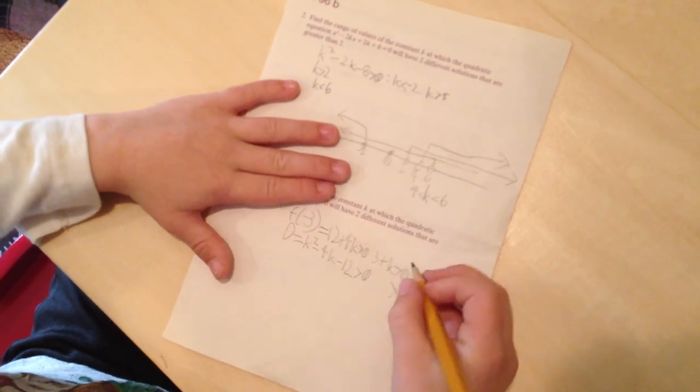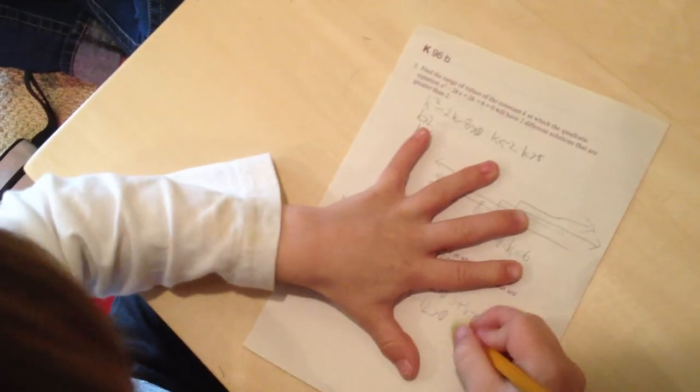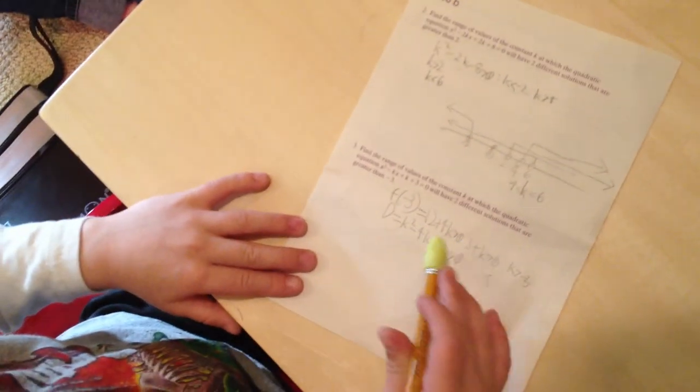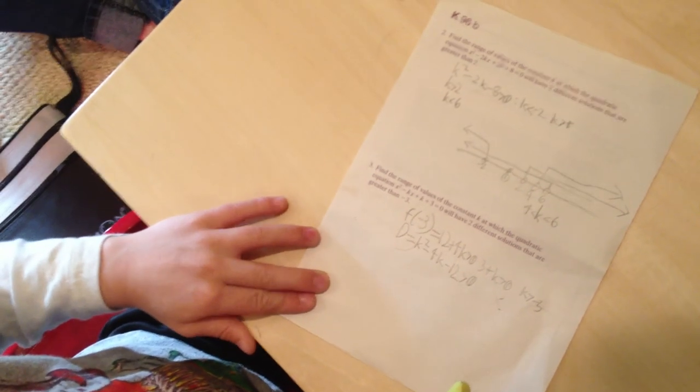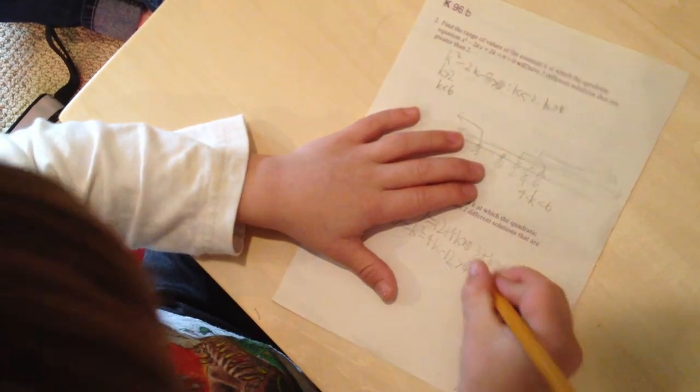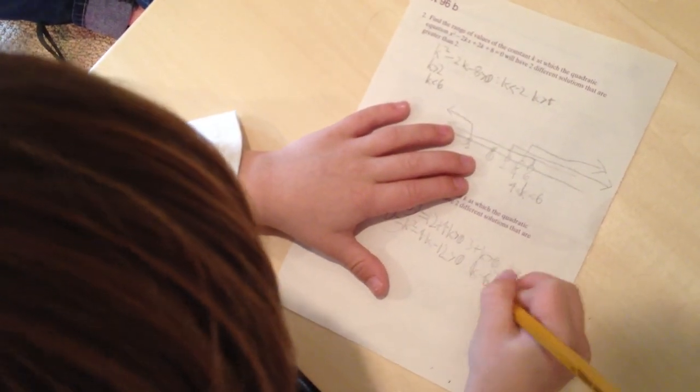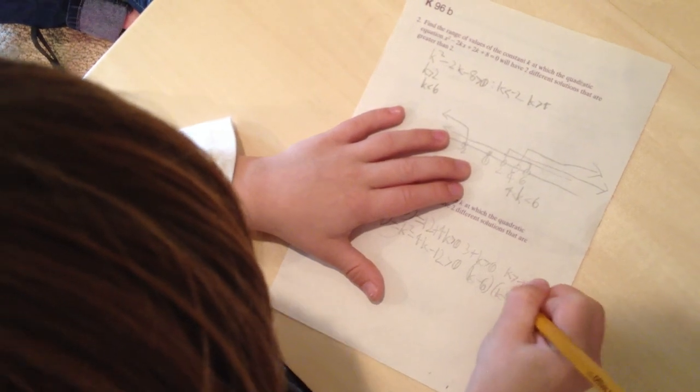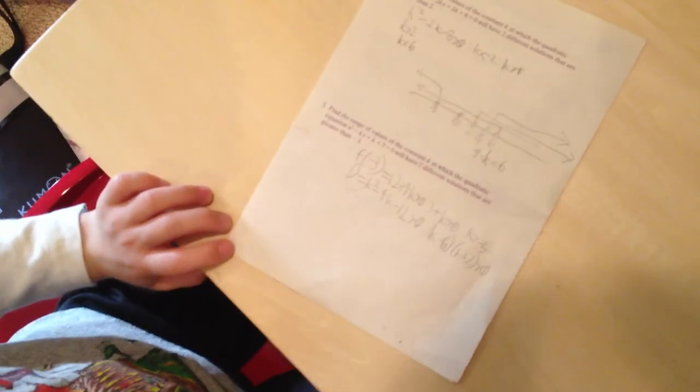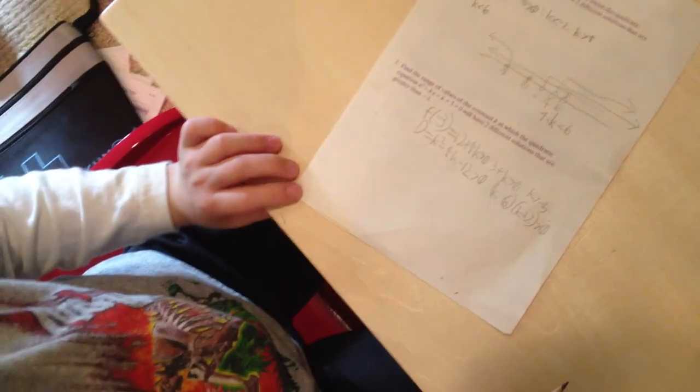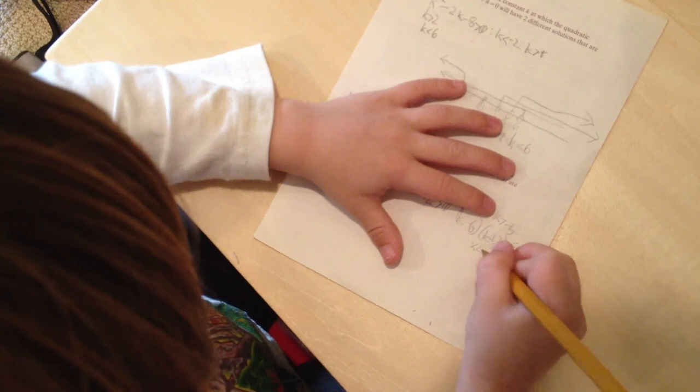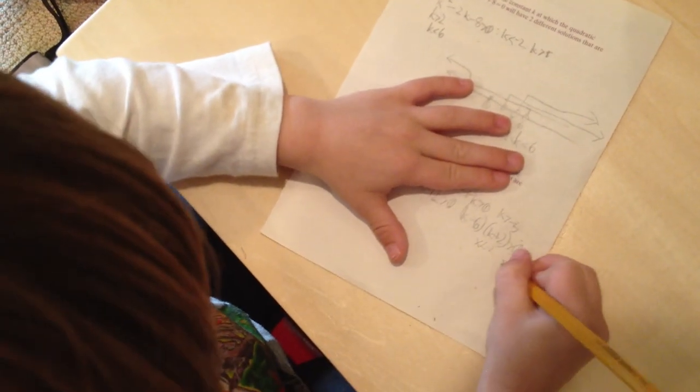And now that's greater than 0. And now I think we could factor it. Well, what times what equals? Negative 6 and 2, or negative 4. So k minus 6 times k plus 2, which is greater than 0. Well, if the polynomial is positive and the discriminant is positive, then x is less than the smallest root, x is less than negative 2, and x is greater than 6.